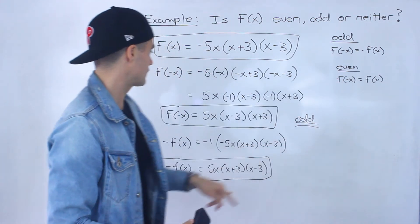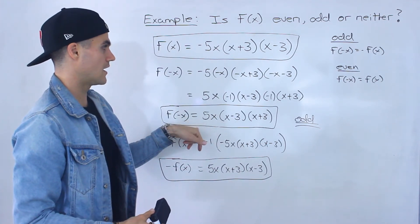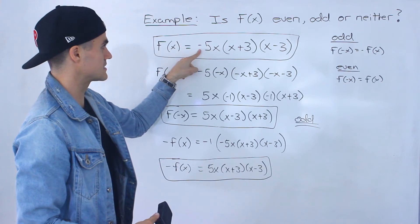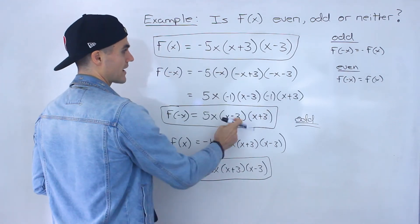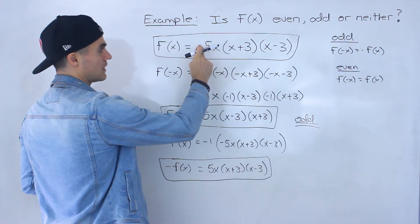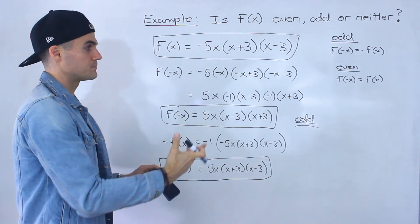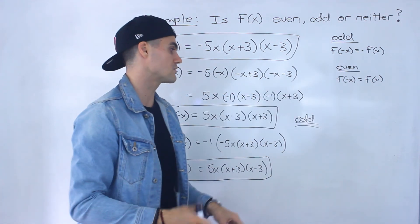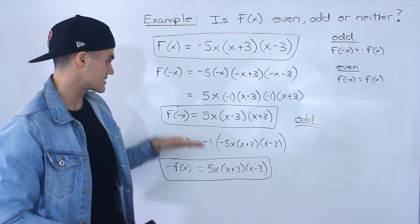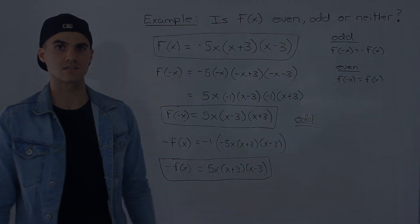We could check—if it's odd then it shouldn't be even. So notice f of negative x is this expression, and what's f of x? It's this. Now they're almost the same—the factors x plus 3 times x minus 3 are the same—but this negative 5x and this positive 5x are different. So f of negative x does not equal f of x, so we know it's not even for sure. And because f of negative x equals negative f of x, we know the function is odd.